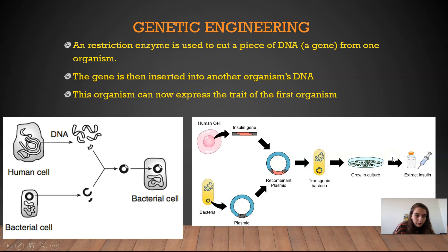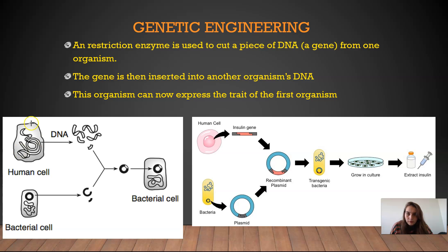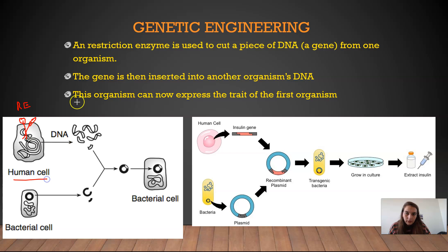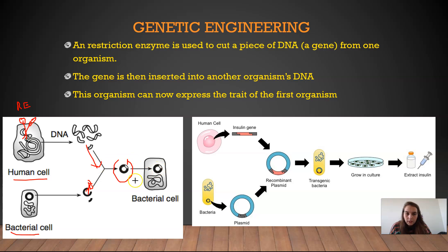So I'm going to go over genetic engineering first — this is just a general overview. The first step is that a restriction enzyme is used to cut a piece of DNA from one organism. In this picture, you have human DNA, and the restriction enzyme comes in and actually cuts the DNA — think about a pair of scissors cutting right here. So the restriction enzyme cuts a specific gene that you want from a human cell. Then that gene is inserted into the cell of another organism — we have a bacterial cell here that's been cut open with that same restriction enzyme, and then the human DNA is inserted into the bacterial DNA.